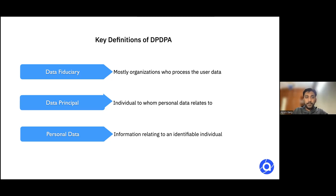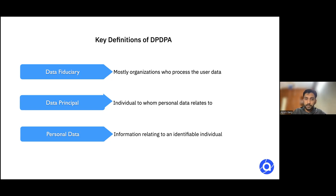Under DPDPA, there are three key terms. One is data fiduciary, which is mostly organizations or companies processing or using the data of the user. Another is data principal, which is the individual whose data is being used or whose personal data it relates to. The third is personal data — any information relating to an identifiable individual. There is personal data and then there is sensitive data, which can be Aadhaar card, PAN card, or any such thing that can actually harm the individual much more than normal data.